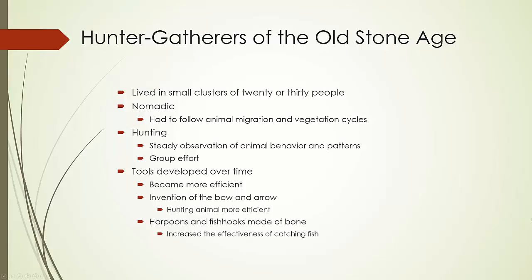With them studying their animals' patterns and plant growth patterns, tools started to develop to make hunting and gathering more efficient. This is where the invention of the bow and arrow came in — you could take down prey from a distance as opposed to getting up close and using early weapons like knives. With a bow and arrow, you could shoot from a distance and then collect it. For those in coastal areas, harpoons and fish hooks made it more efficient to catch fish as opposed to just using nets.